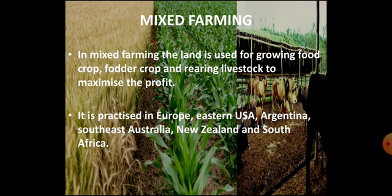Mixed farming refers to the cultivation of food crops, fodder crops and the rearing of livestock at the same time on the same land. The combination of different primary activities is complementary to each other and adds to the farmer's profit. Mixed farming is practiced in Europe, eastern USA, Argentina, Southeast Australia, New Zealand and South Africa.